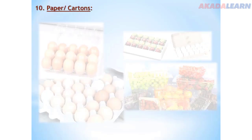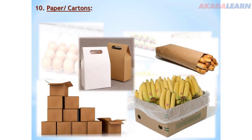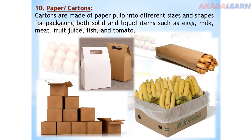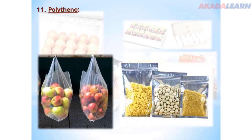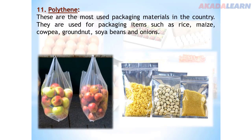Number ten: paper or cartons. Cartons are made of paper, shaped into different sizes and shapes for packaging both solid and liquid items such as egg, milk, meat, fruit juice, fish and tomatoes. Number eleven: polythene. These are the most commonly used packaging materials in the country. They are used to package agricultural produce such as rice, maize, cowpea, groundnut, soybeans and onions.